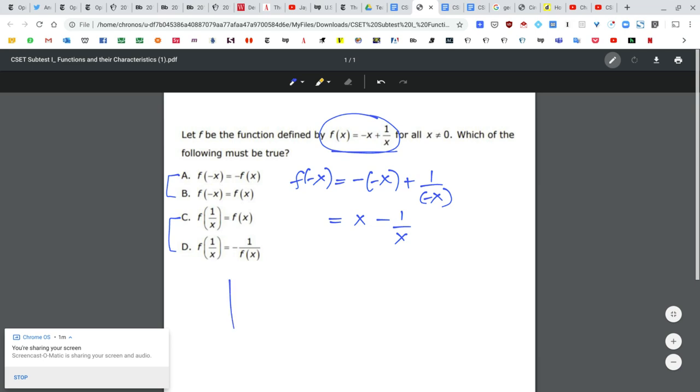If f of negative x equals f of x, it will be true if a graph is symmetric about the y-axis. So the y value at a negative x value is the same as the y value at a positive x value. That's called an even function. So it's not choice B.